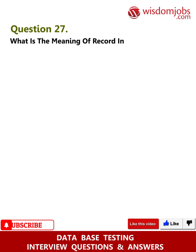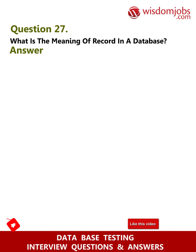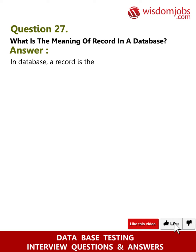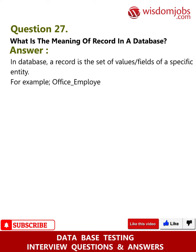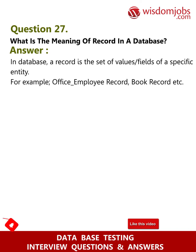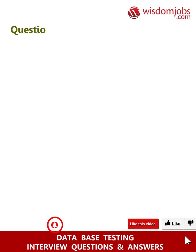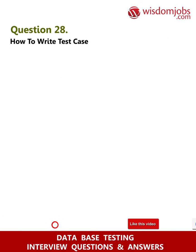Question 27: What is the meaning of a record in a database? Answer: In a database, a record is the set of values or fields of a specific entity — for example, an office employee record, a book record, etc.